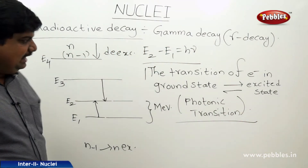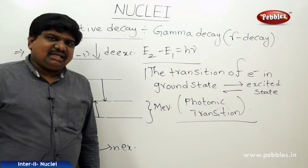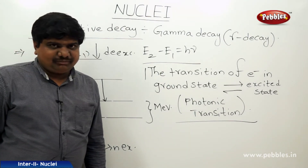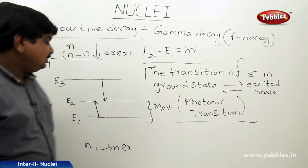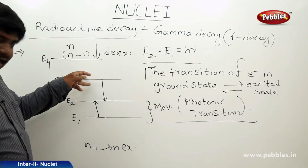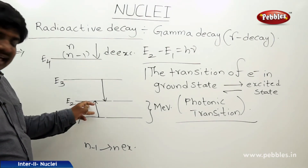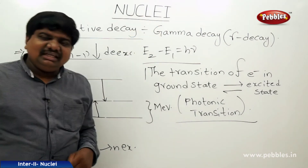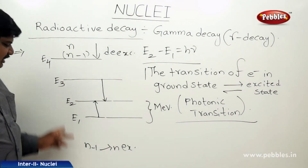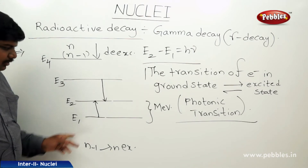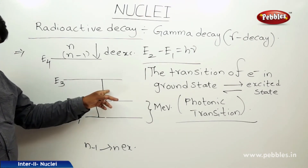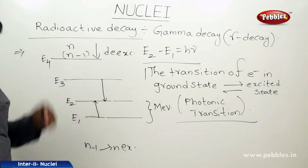Gamma decay is sometimes associated with alpha and beta decays. If the daughter nuclide is at an excited level and de-excites, there is a possibility of gamma decay. In atomic structure, there are different energy levels: ground state, first excited, second excited, and so on.